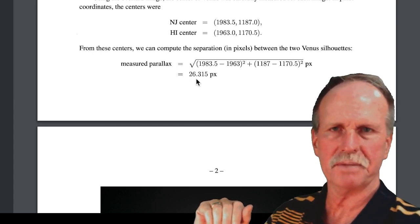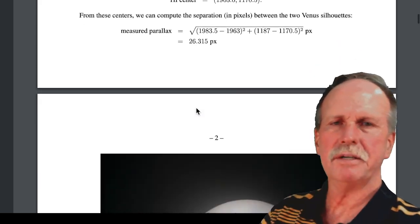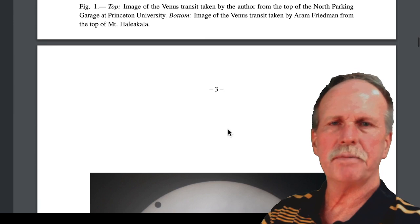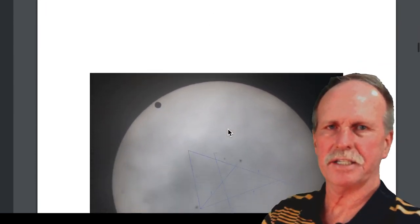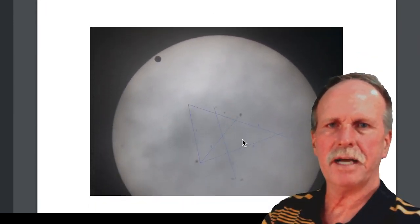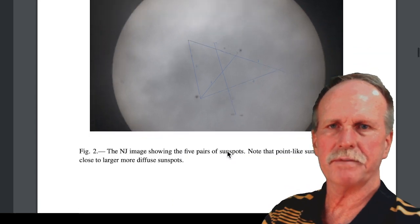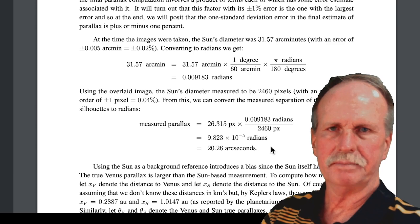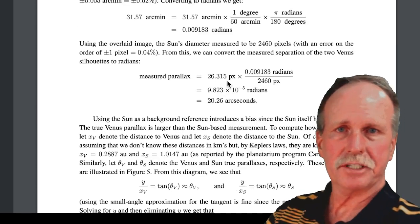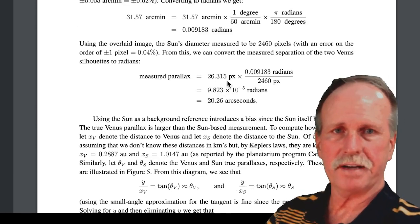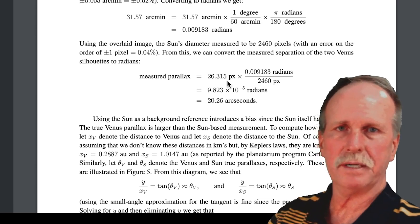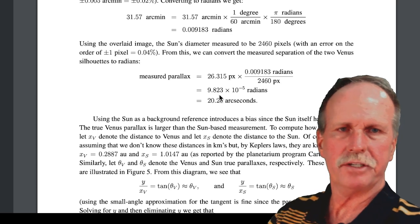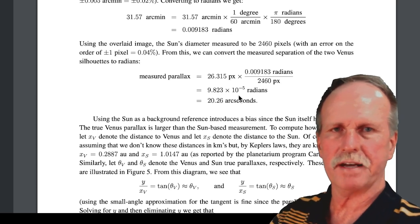The distance was 26.3 pixels. Then he looked at the width of the sun and converted the number of pixels to arc seconds. Here's him lining up the sunspots to make sure everything lined up properly. This is the measured parallax he was able to get — he took the measured parallax of 26.315 pixels between the two silhouettes of Venus, and came up with 9.823 times 10 to the negative 5 radians as the separation between the two.